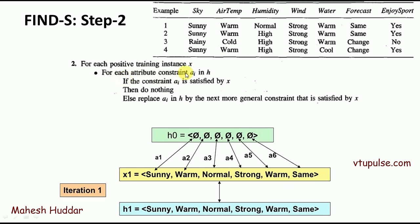For each attribute constraint ai in H, if the constraint ai is satisfied by x — that is, in the hypothesis we have null as a1, null as a2, null as a3, null as a4, null as a5, null as a6 — we need to compare these attribute values against the example values. For instance, null is compared with Sunny, null is compared with Warm, and so on. If they match, ai is satisfied by x. If there is no match — for example, null does not match with Sunny — we go to the else part.